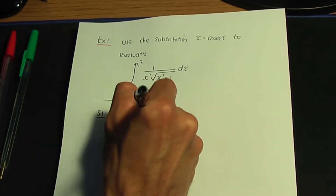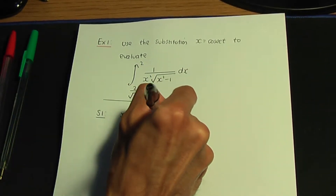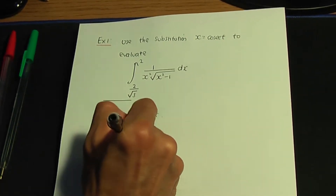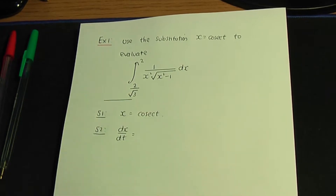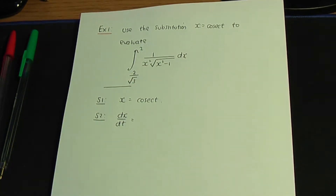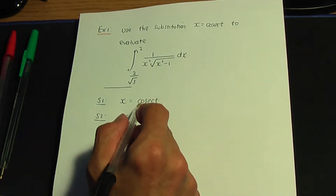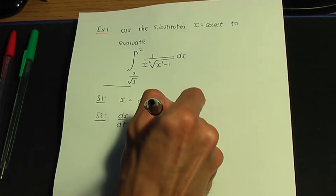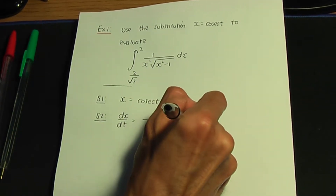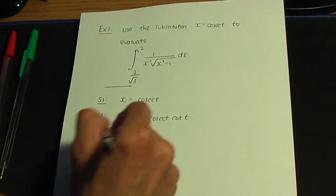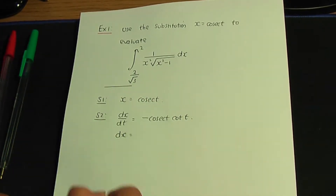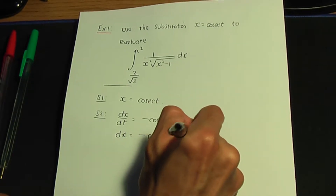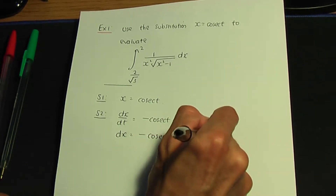Our substitution is x is equal to cosec t, so I'm going to take that and work out dx/dt by differentiating. When we differentiate cosec t it's minus cosec t cot t, so dx is minus cosec t cot t dt.